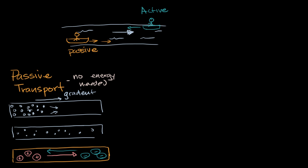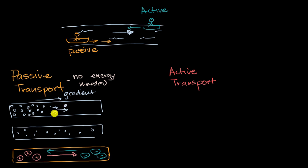The opposite is active transport — this is when you go against the gradient. For example, instead of a particle moving in the direction of its concentration gradient, it actually moves against it. Or imagine a positive particle: instead of naturally moving toward the negative side, you make it go closer to the other positive particles. This is going to require energy.